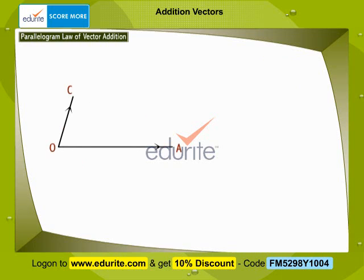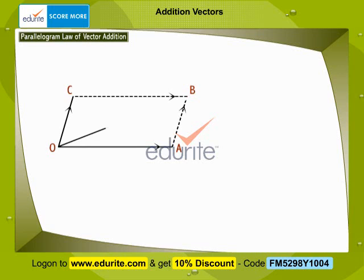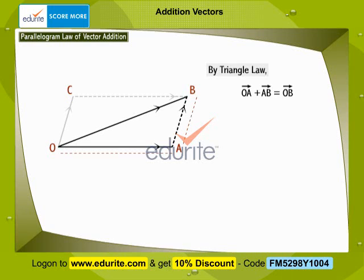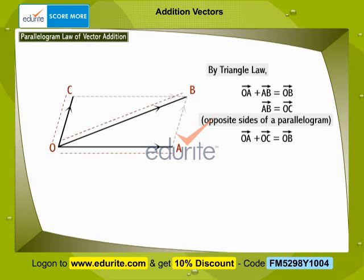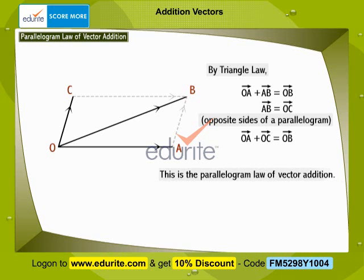We are given two vectors OA and OC. We draw the parallelogram with OA and OC as the adjacent sides, then draw the diagonal through their common point O. Using the triangle law, OA + AB = OB. But AB = OC since they are opposite sides of a parallelogram, so OA + OC = OB. If two vectors are represented by two sides of a parallelogram in magnitude and direction, then their sum is represented in magnitude and direction by the diagonal through their common point. This is the parallelogram law of vector addition.